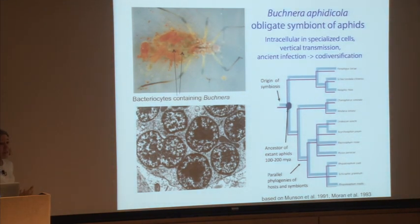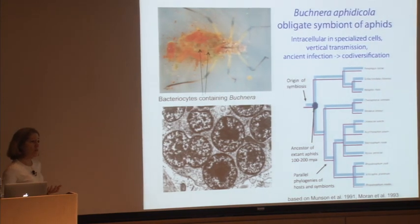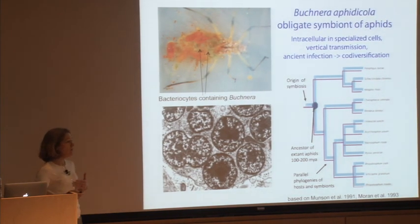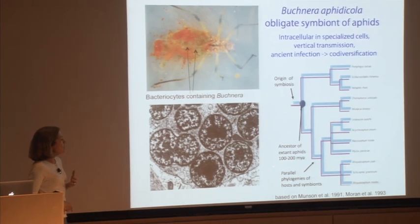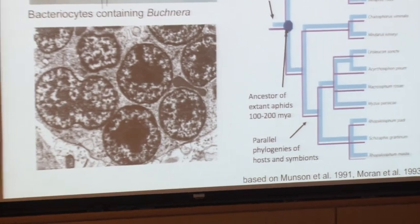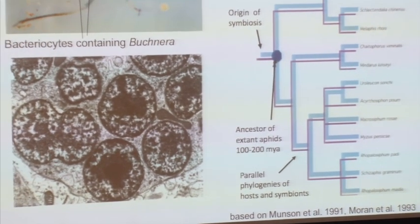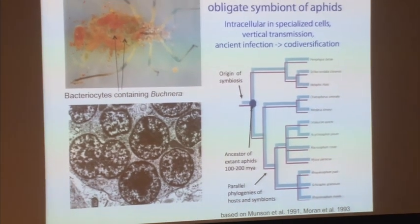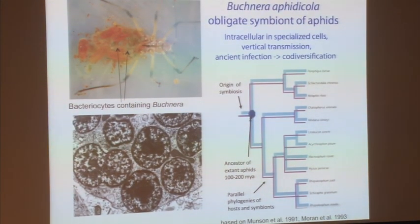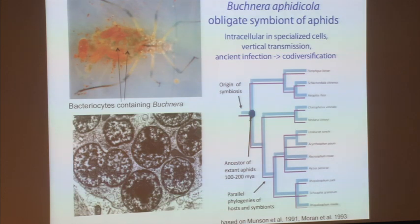The basic pattern seen again and again in these symbioses is that symbionts are ancient in the host. Buchnera is very ancient — it infected an ancestor of all living aphids at least 100 million years ago, maybe closer to 200 million years depending on how you interpret the fossils. This vertical transmission seems to have been absolutely faithful ever since, because phylogenies at different levels for Buchnera and the aphids match — each time the aphids speciate, the Buchnera also diverge.